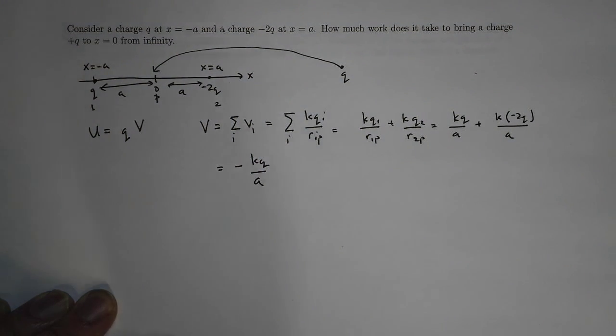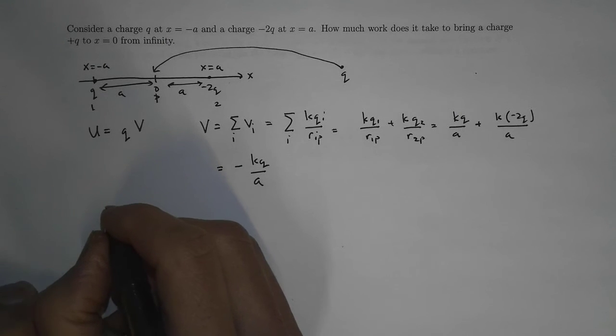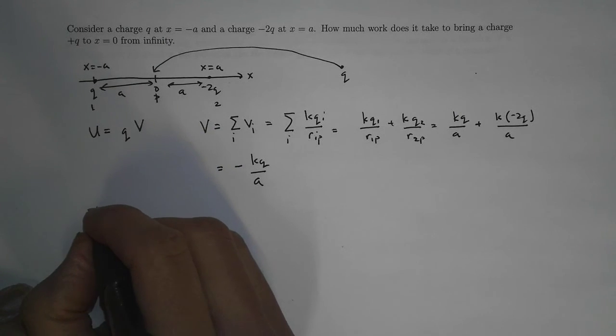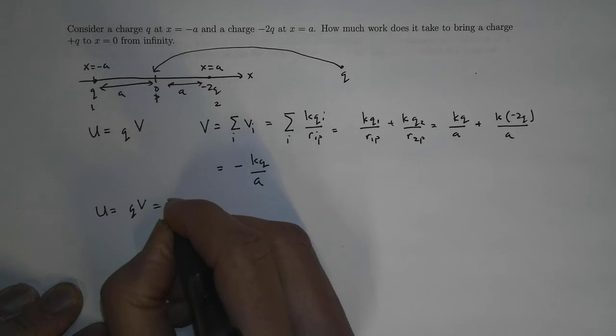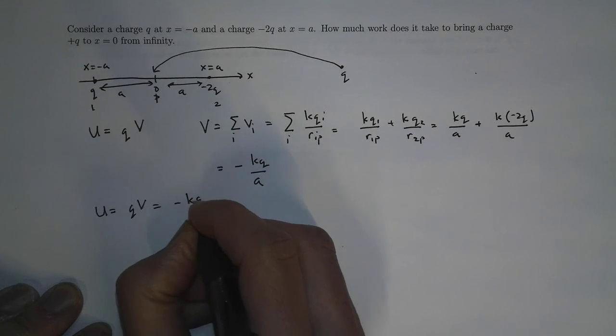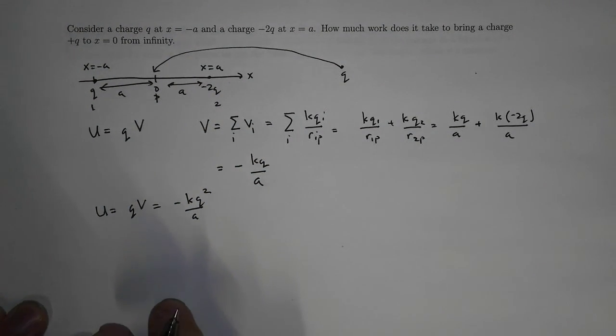And so the amount of work it takes, the electrostatic potential energy, which is equal to the work in this case, is just qV, which is -kq²/a. And that's it, hope that was helpful.